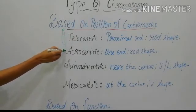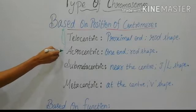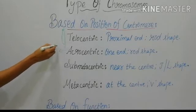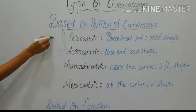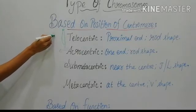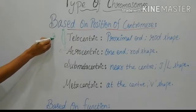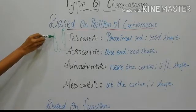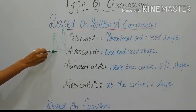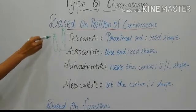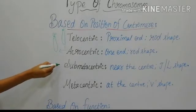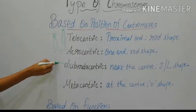Next is the acrocentric chromosome. In acrocentric, the centromere is present at one end — not at the proximal end, but a little below it. Hence, one arm is short and one arm is very long. This is also a rod-shaped chromosome.